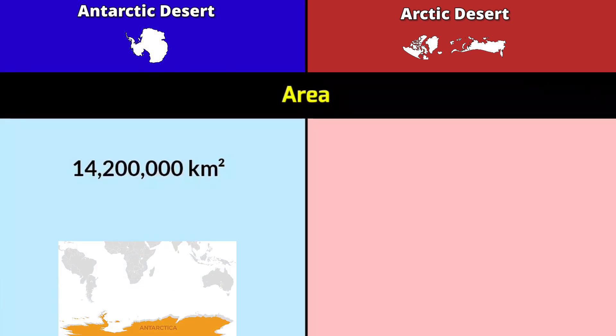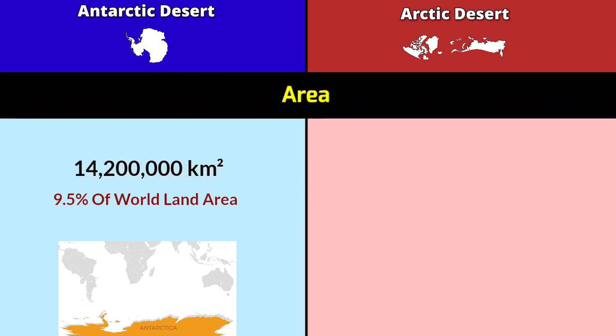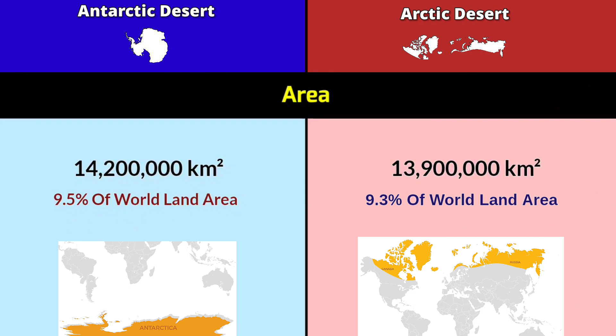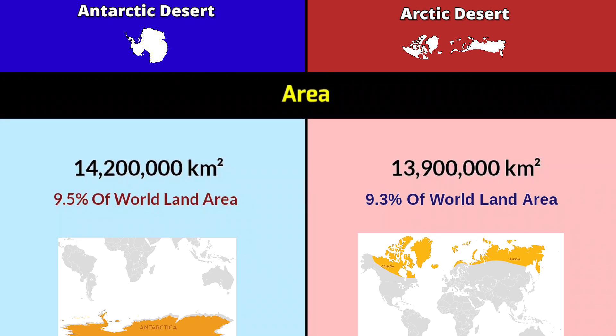Area: Antarctica Desert is 14.2 million square kilometers, which is 9.5% of world land area. Arctic Desert is 13.9 million square kilometers, which is 9.3% of world land area.